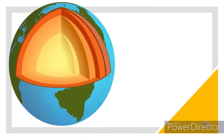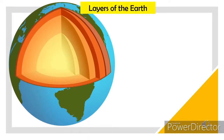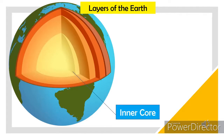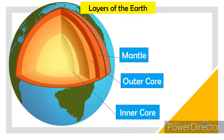Starting at the center, Earth is composed of four distinct layers. From deepest to shallowest, they are the inner core, the outer core, the mantle, and the crust. Except for the crust, no one has ever explored these layers in person.